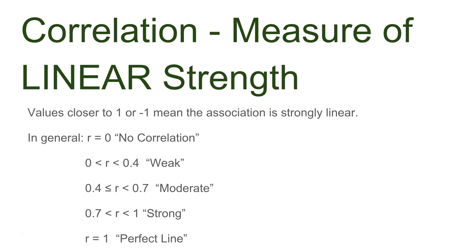If R is 0, then we have no correlation at all. It might be a curve or just everything scattered everywhere. Actually, that would be more of a very weak correlation, but basically if R is 0, there's no correlation and no linear strength. We'll take a look at an example in just a second.